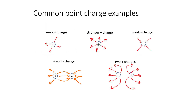Electric fields around point charges are always drawn away from positives and toward negatives. If you have a stronger charge, you'll have more arrows to represent it. If you have a positive and a negative, the arrows go toward the negative and away from the positive, forming a specific pattern. For two repelling charges, the arrows point away from each other — so if you see arrows pointing away, you know those are positive charges.